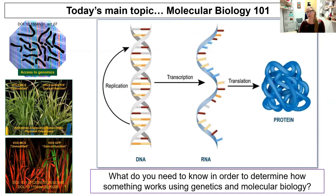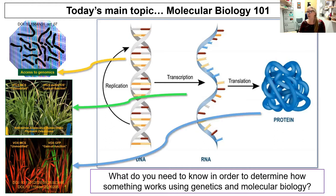Now that I've done lots of hand-waving and talked about tractors, what do you really need to know? Today's main topic is Molecular Biology 101. The important names for today: DNA replicates — it creates copies of itself; DNA is transcribed into RNA; RNA is translated into proteins. This is the central dogma. This diagram will come up again and again, and hopefully it will help you understand what I'm talking about throughout.